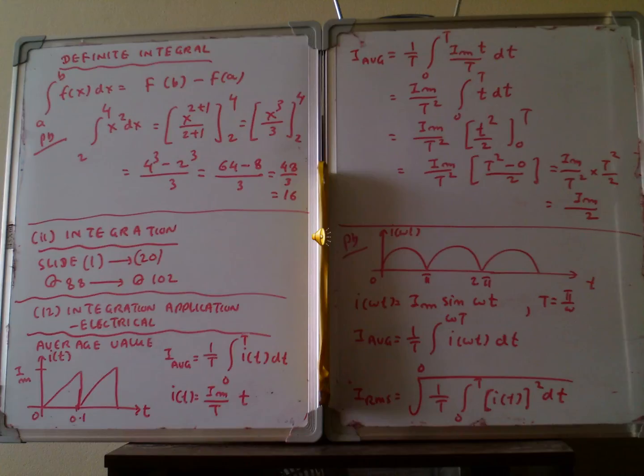We substitute the upper limit T and lower limit 0 in place of t. So we get i_m/T² multiplied by (T² - 0)/2, which simplifies to i_m/T² × T²/2. So we get i_m/2.